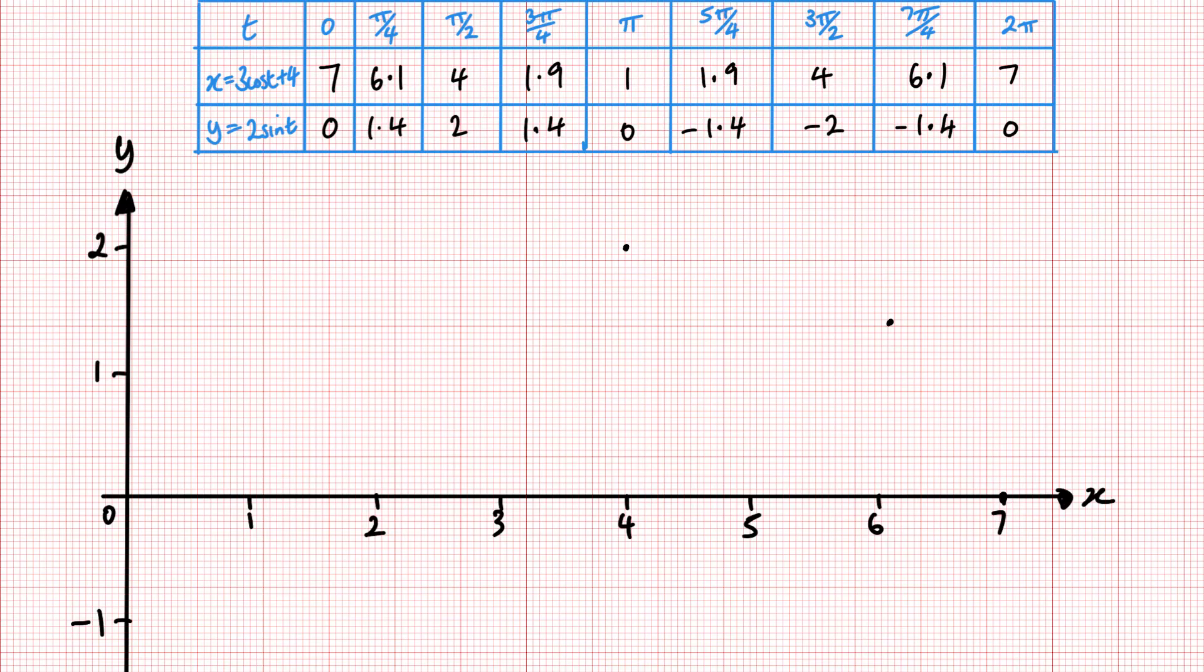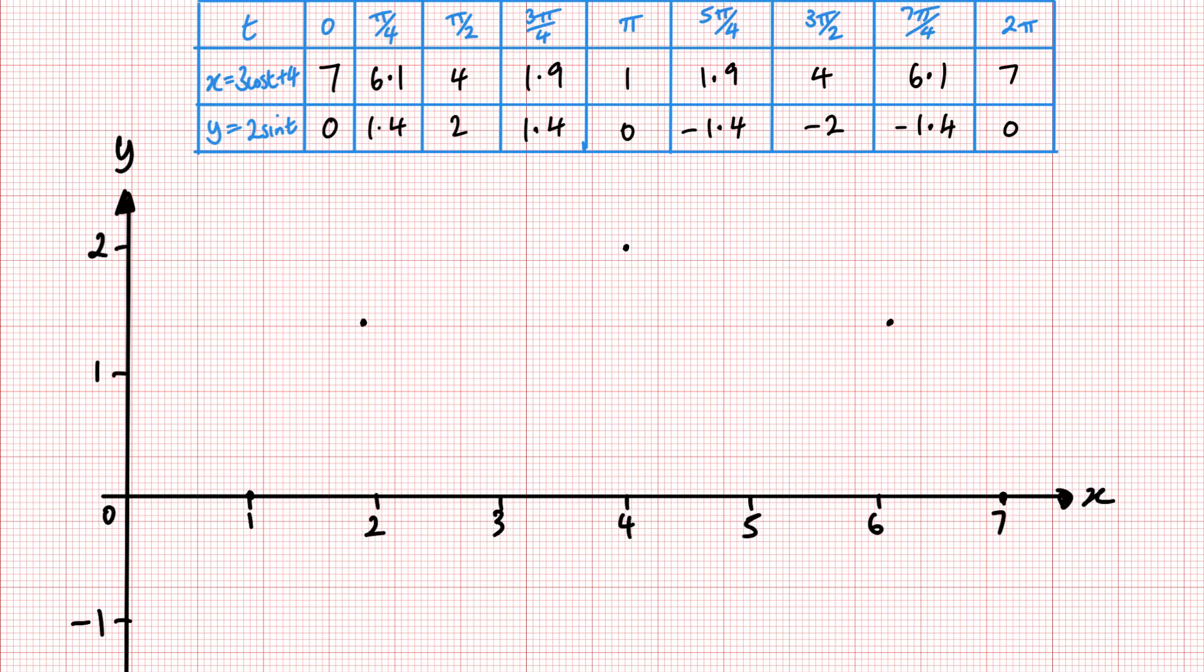Next one I've got 4 across, 2 up, nice easy one to plot. Then I've got 1.9 and 1.4, which is there. And then I have 1.0 so just on my x-axis here. Now I'll just plot the other points quickly, and now we have all my points plotted all the way around back to 7, 0.